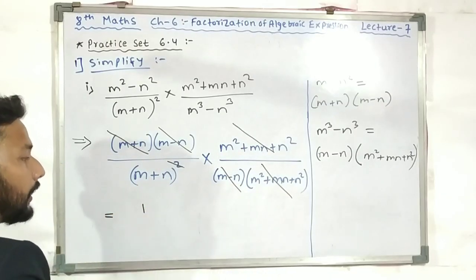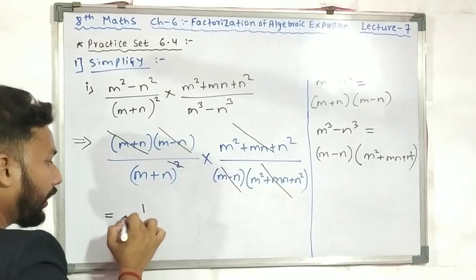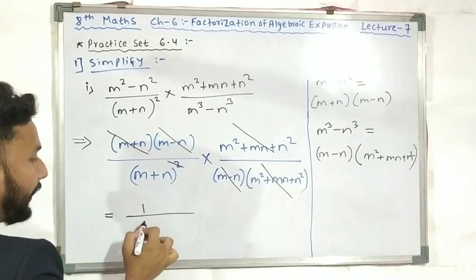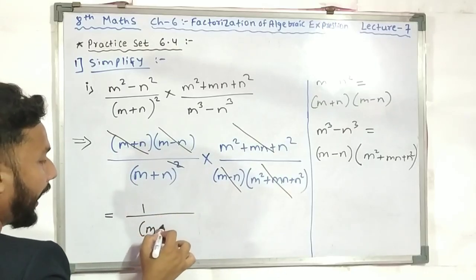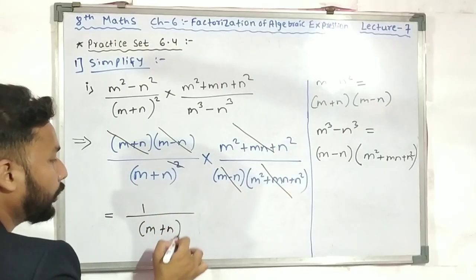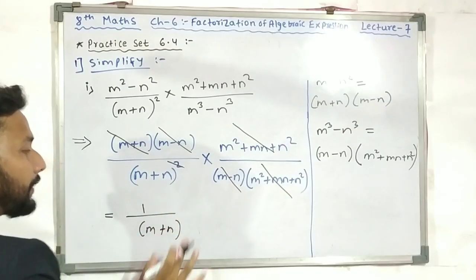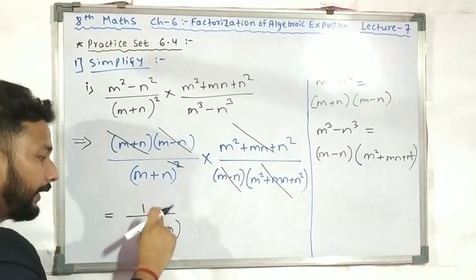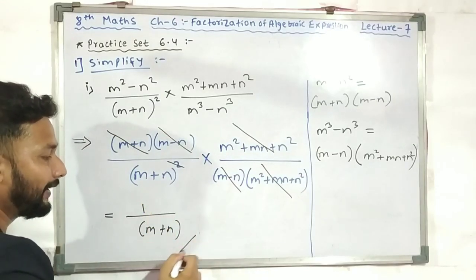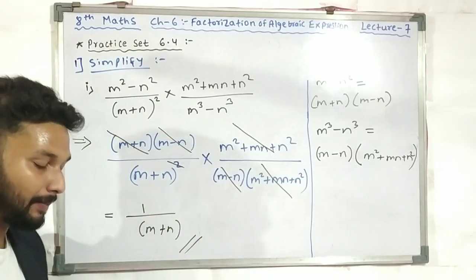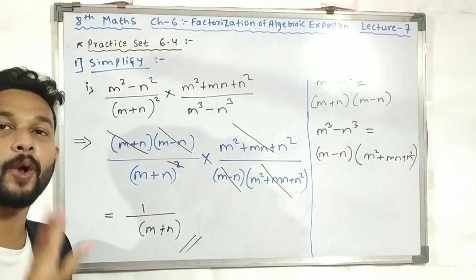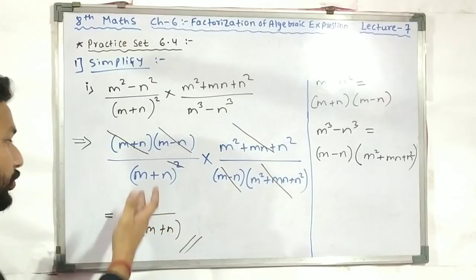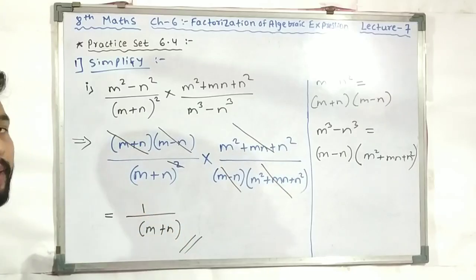So what is left? Just m+n is left. So this is m+n. What does our answer mean? That's it, folks — it's 1 upon (m+n). Here we have to stop, and this is our final answer, which is 1 upon (m+n).